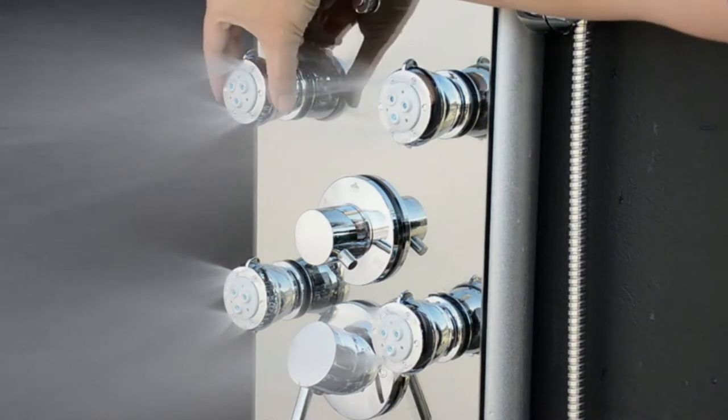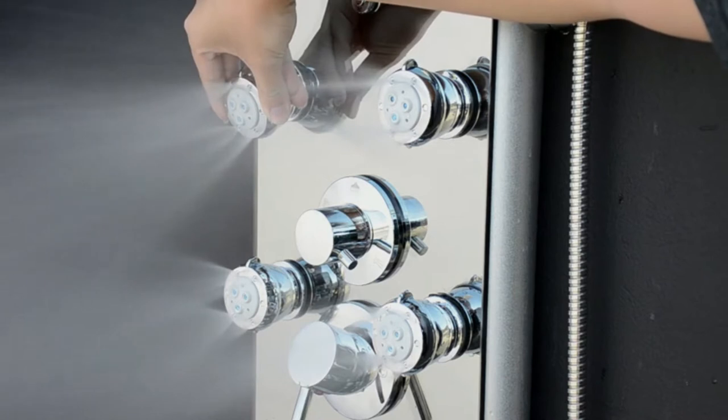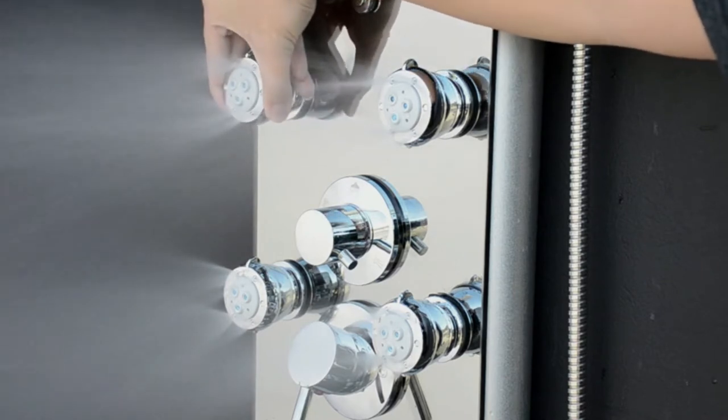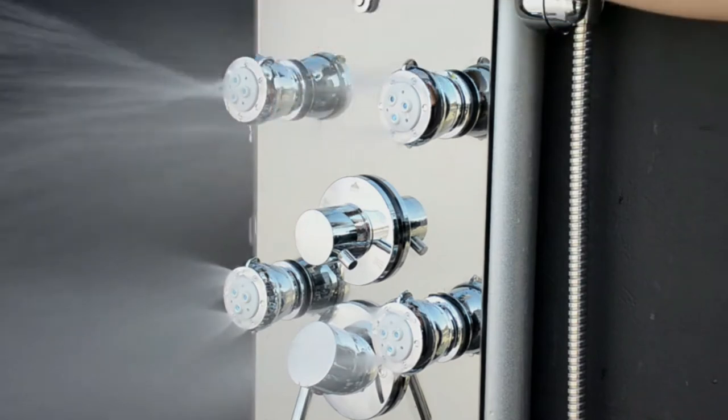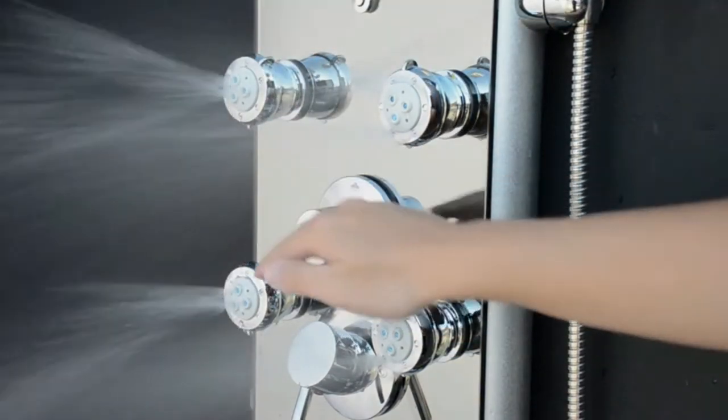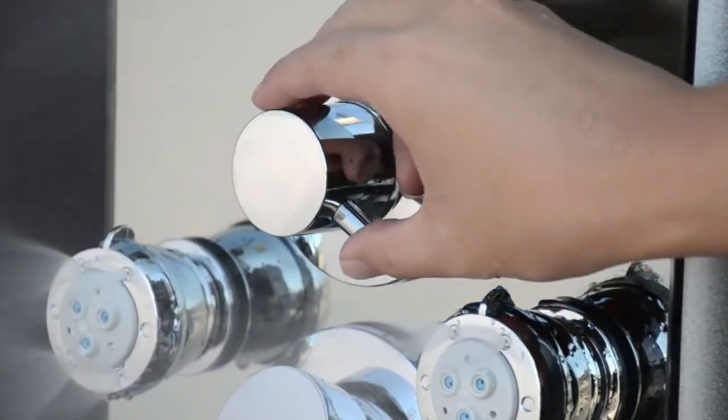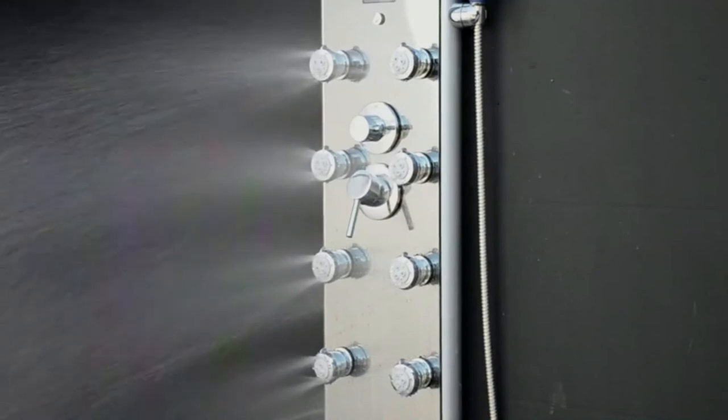As you can see, the body spray pods are angle adjustable. In addition, they can be rotated to choose between a pulsating massage jet and a misting spray. All eight body spray pods can be operated simultaneously for an encompassing shower.